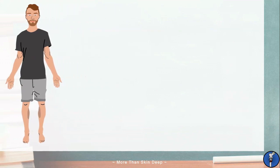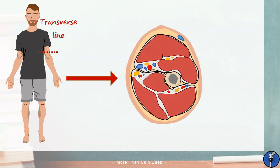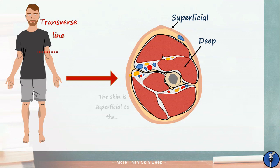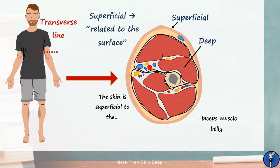The next specialised terms are used to describe how close structures are to the surface of the body. To see how these are used, we need to take a slice out of Greg's arm. Here, we'll take a transverse cut across his upper arm in order to view the muscles, arteries, veins, and nerves within it. When looking at this, we can see the pink skin around the outside, and everything else on the inside. We can say that the skin is a superficial structure, and the muscle bellies are deep structures, because the skin is closer to the surface of the body than the muscles are. In other words, superficial means related to the outside, and deep means further down.